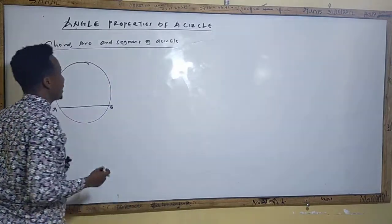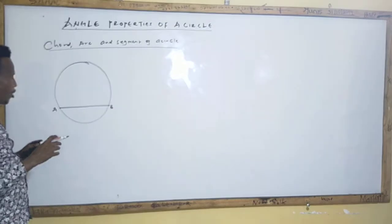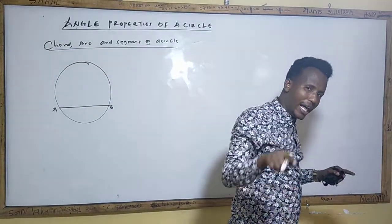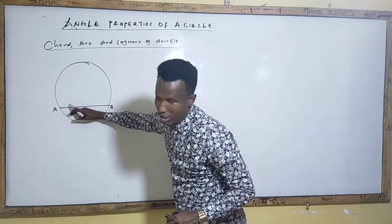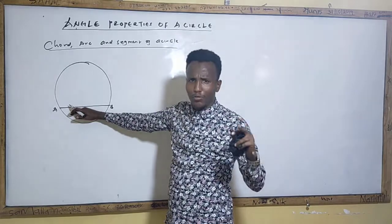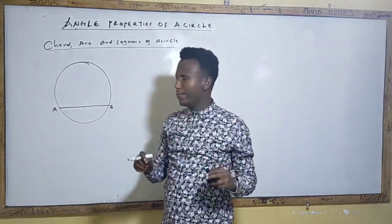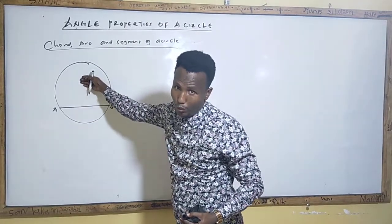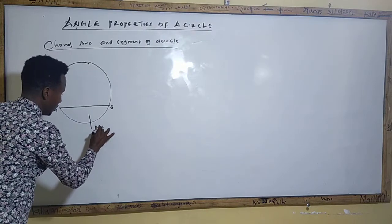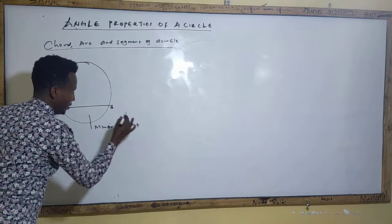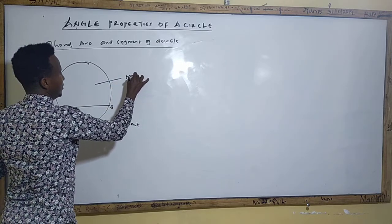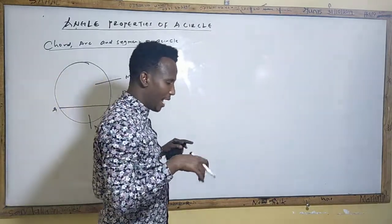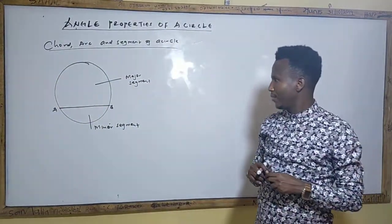What's a segment? A segment is a region bounded by a chord and an arc — it's a region of a circle bounded by a chord and an arc. Any part of the circle bounded by a chord and an arc is what you normally call a segment. We can call the smaller one a minor segment and the larger one a major segment.